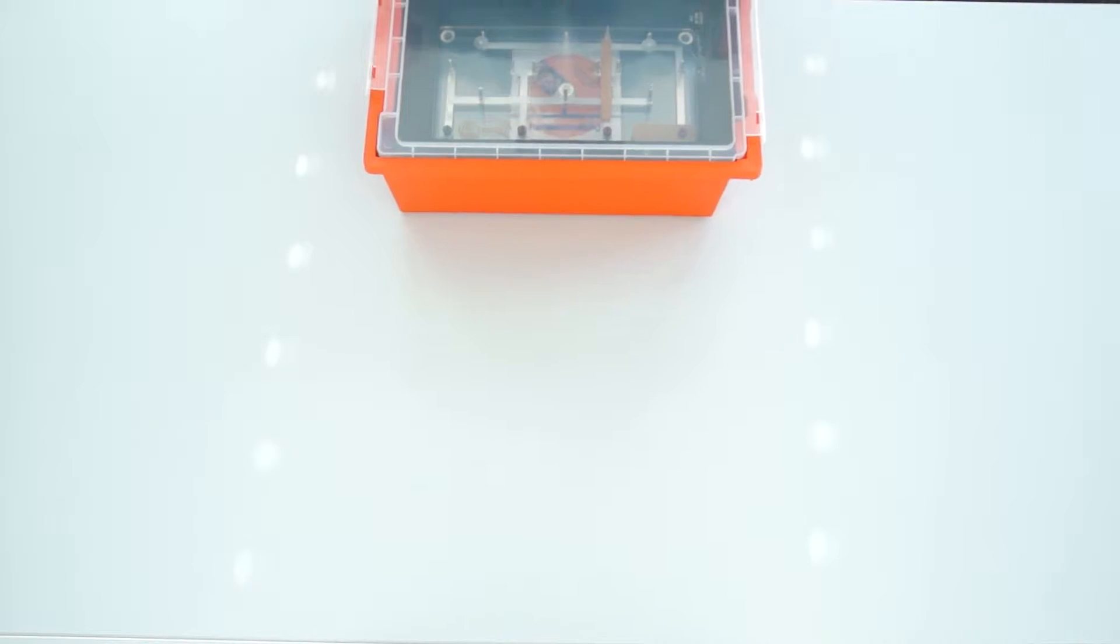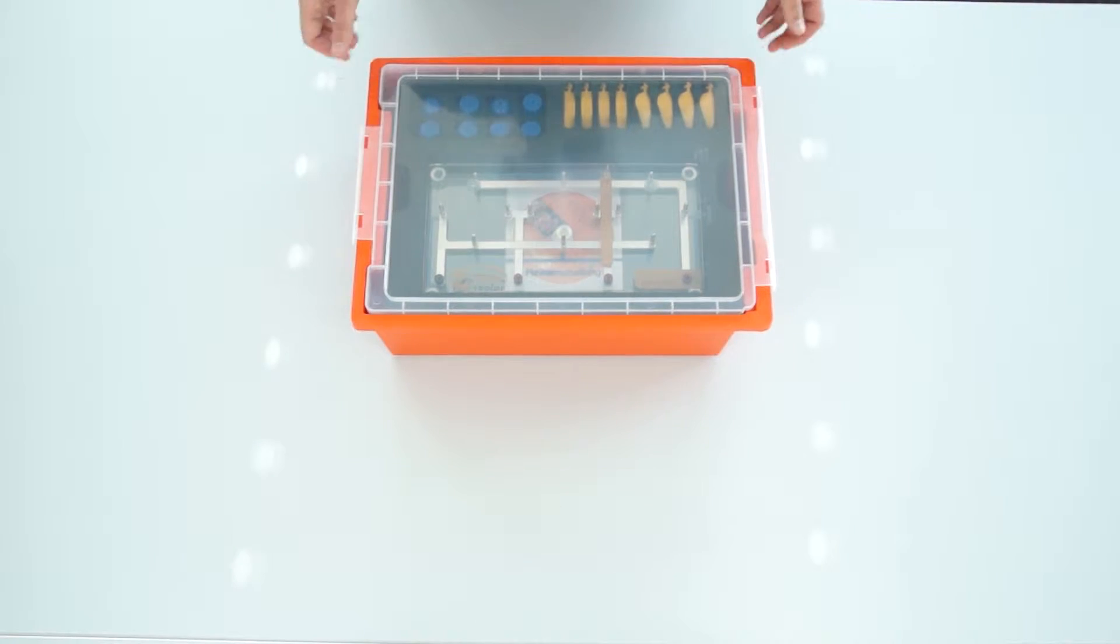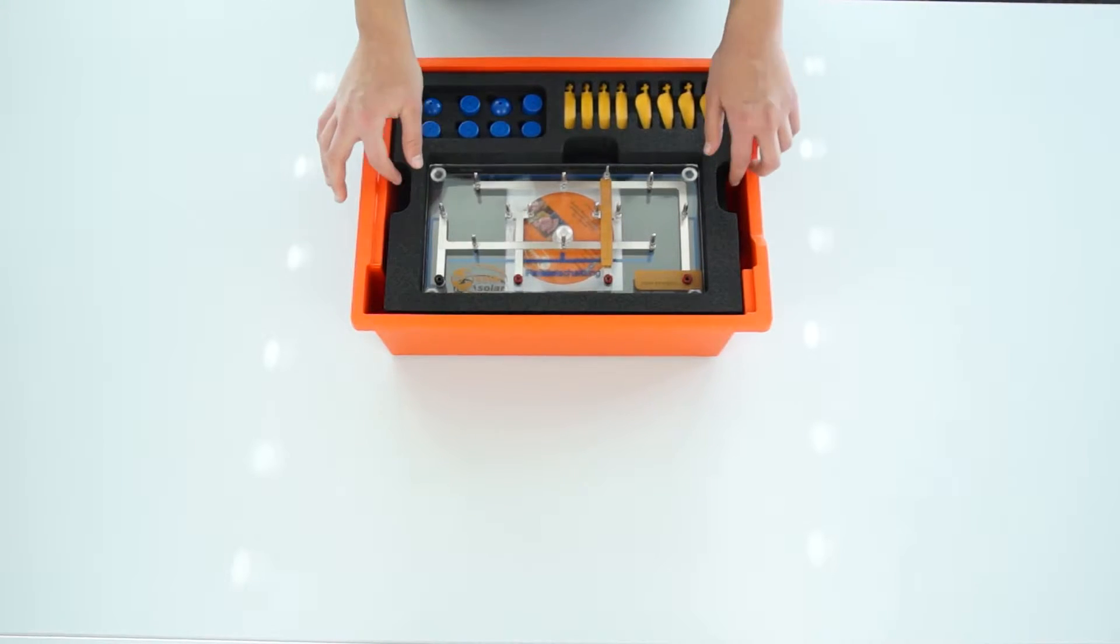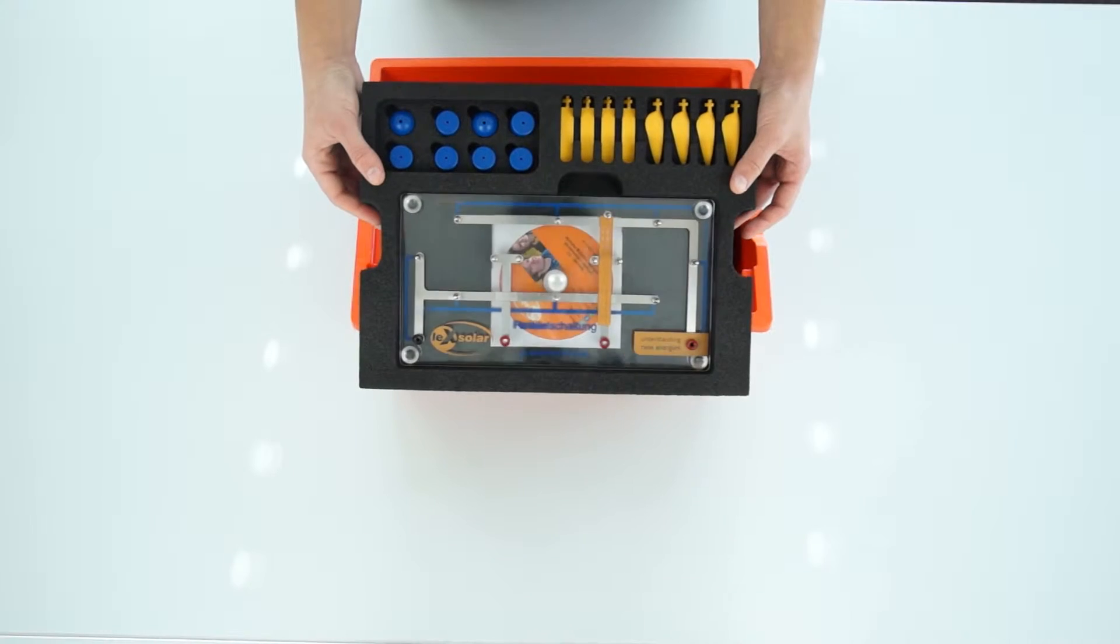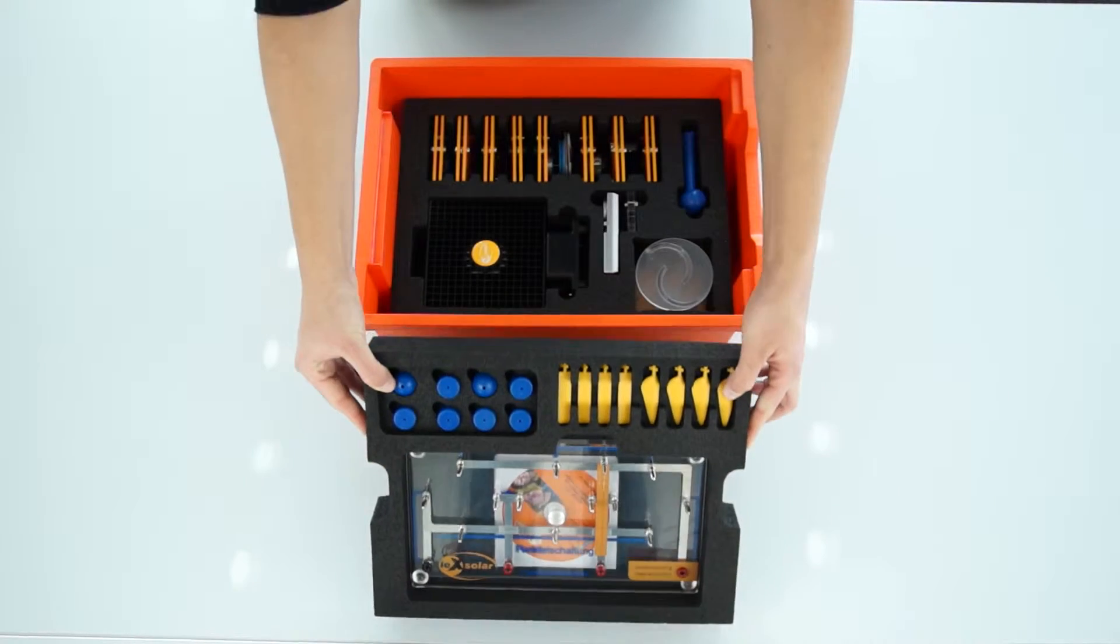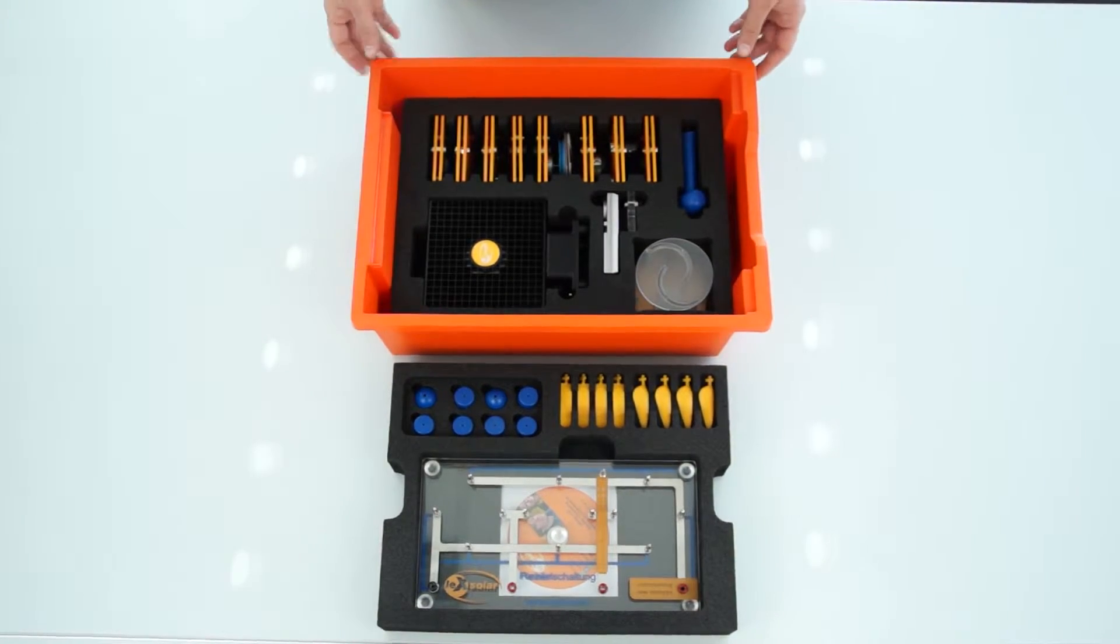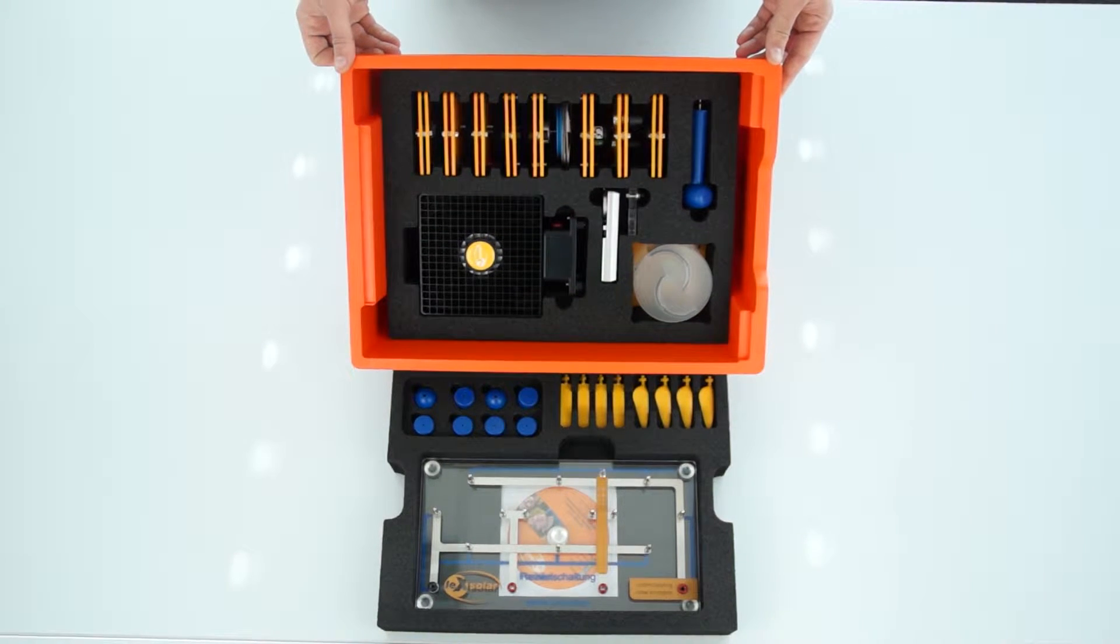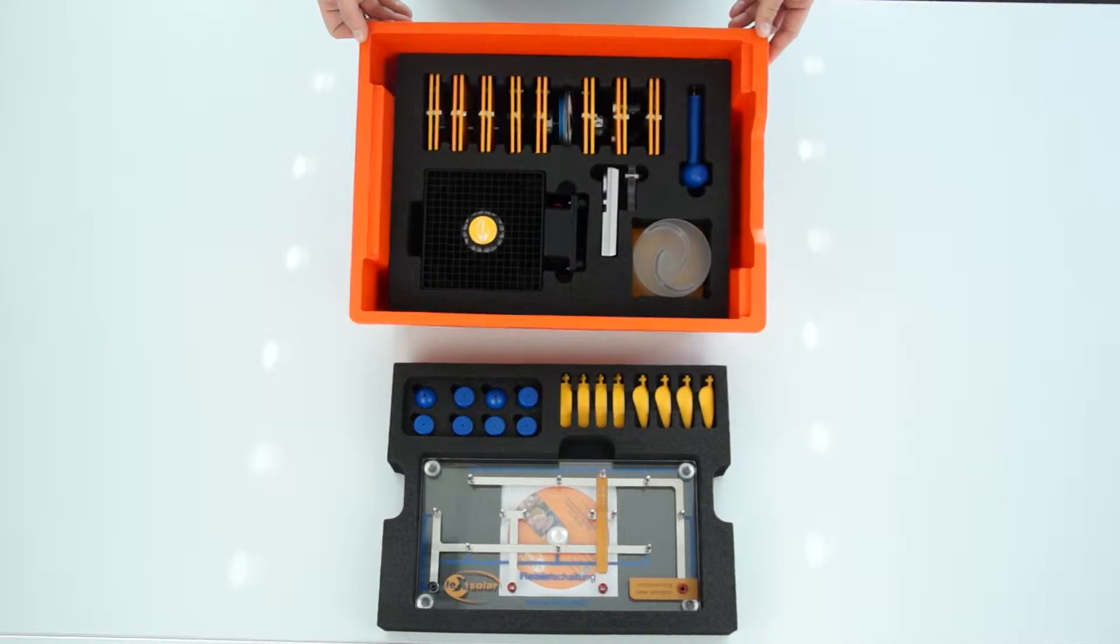This is the LexSolar Wind Lodge, our experiment system for the basics of wind energy. The system consists of two deposits and contains numerous components for carrying out various experiments. In the following experiment we will investigate the influence of the shape of the blades of a wind turbine.